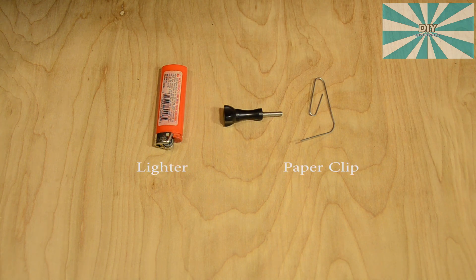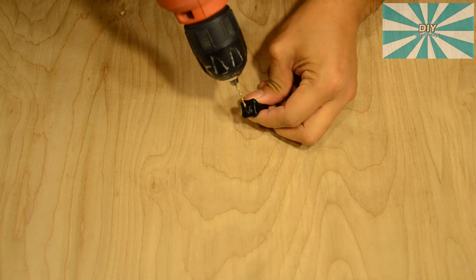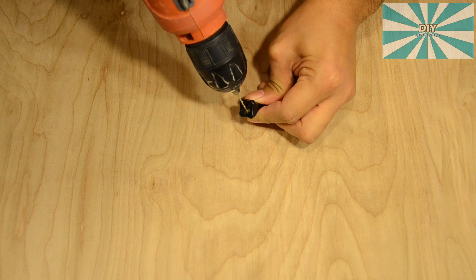Here are the materials you'll need for method two: a lighter and a large paper clip. For method number one we'll start by drilling a pilot hole into the well of the screw with the 1/16th drill bit.